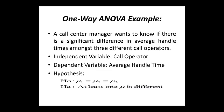A call center manager wants to know if there is a significant difference in average handle times amongst three different call operators. The independent variable is call operators and the dependent variable is average handle time. The null hypothesis is that there is no significant difference between the average handle times of all three operators — mu1 equals mu2 equals mu3. The alternate hypothesis is that at least one mean is different — meaning mu1 is not equal to mu2, or mu1 equals mu2 but not equal to mu3; any of these situations can prevail.